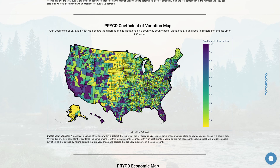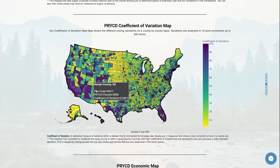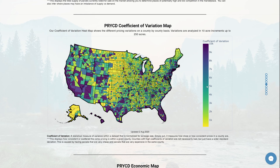If I hovered over this map — they're all interactive — you can see all the different counties and their values associated with them. So let's say I went to San Juan County, New Mexico. You can see that this coefficient of variation is 5,084.9, which is midway through our scale here, meaning it has a medium level of price variation.